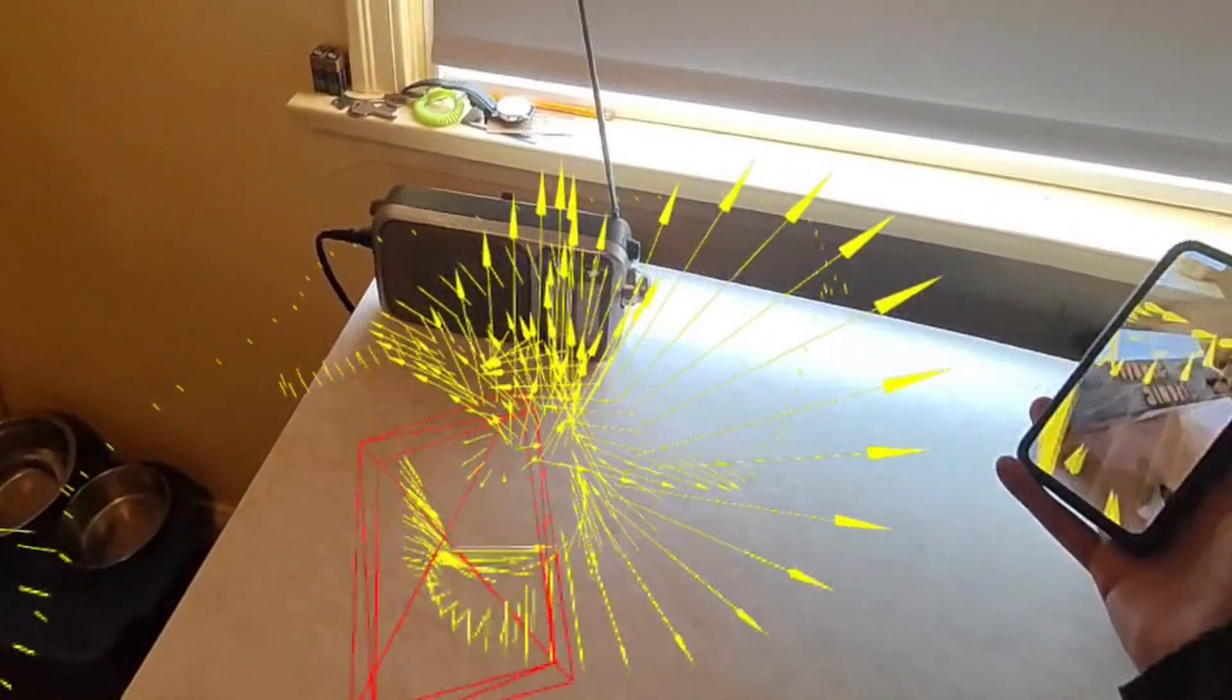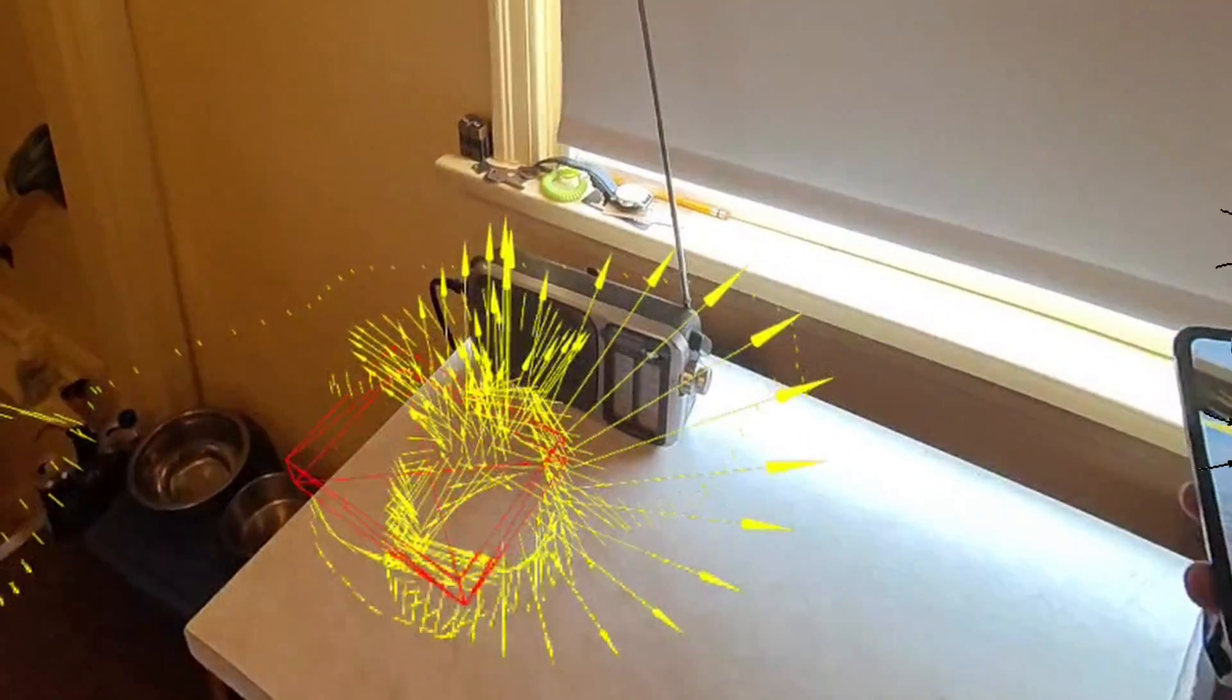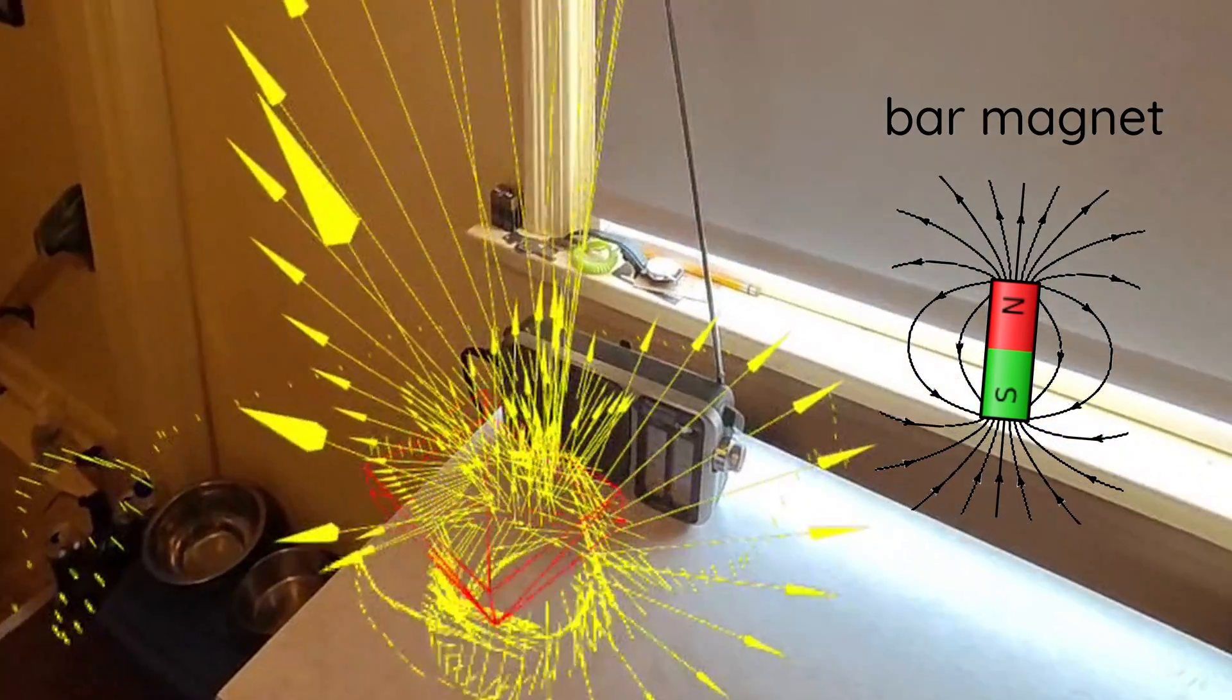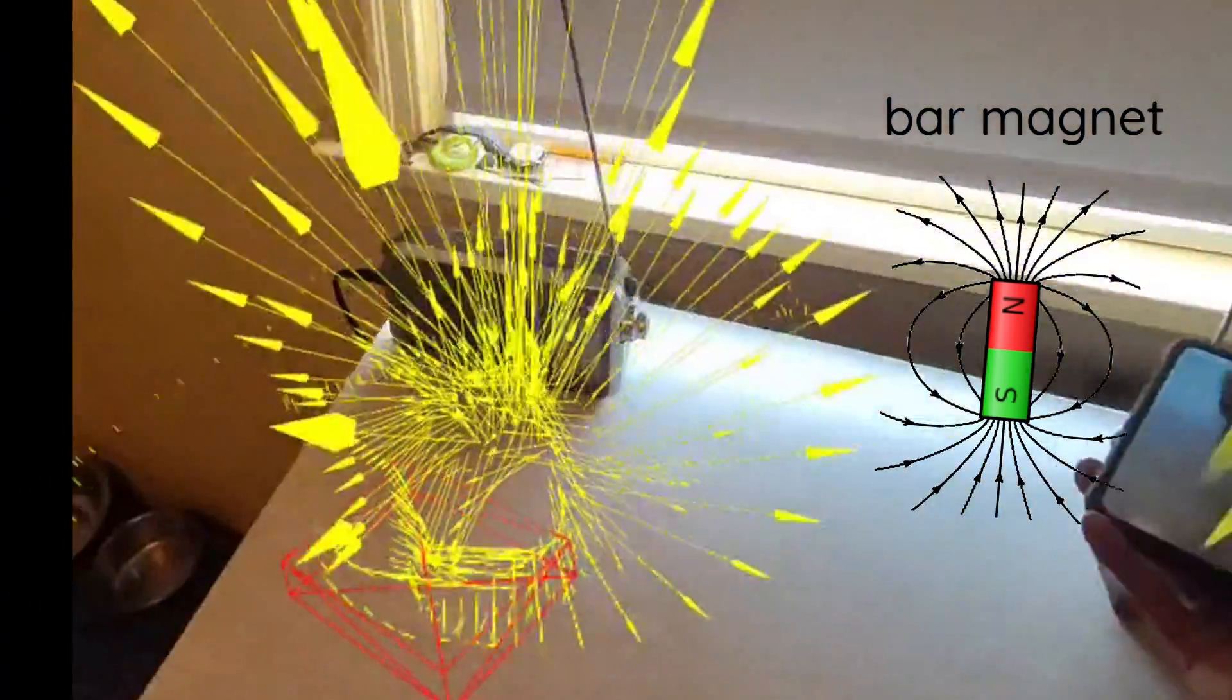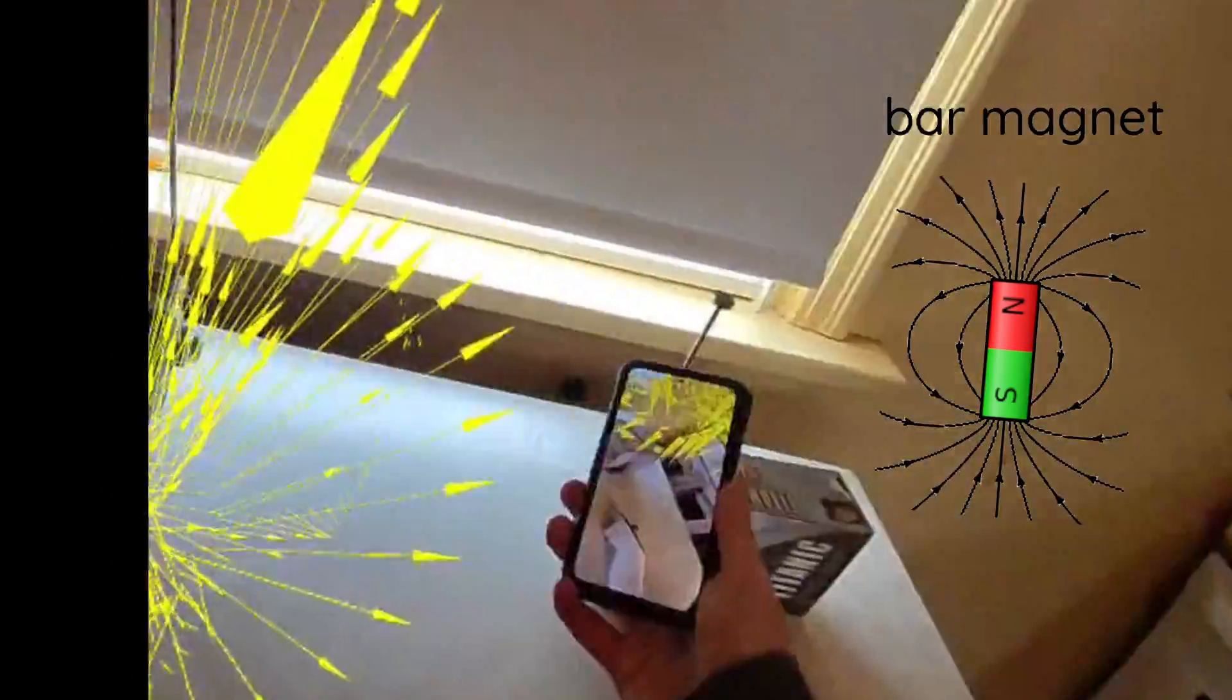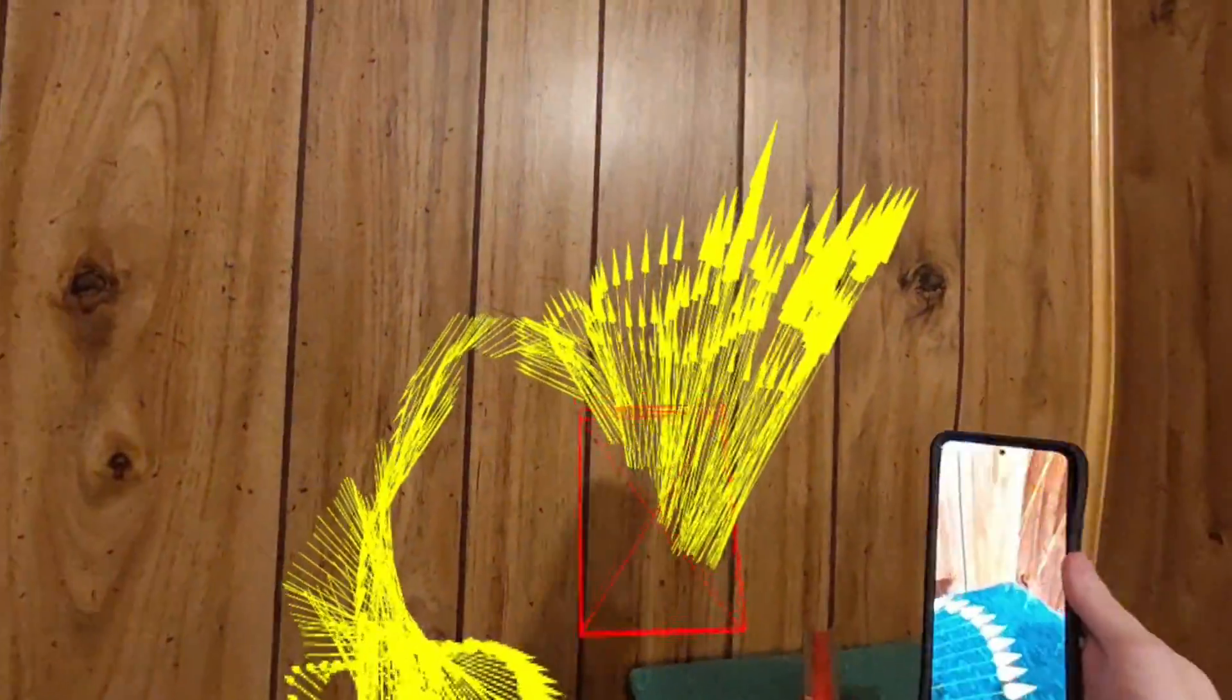We can start exploring some of the different magnetic fields. Bar magnets are interesting because they give a good baseline to make sure everything is working correctly. All of the magnetic field lines travel from the north to the south pole, and we have this spherical cylindrical type shape where all these magnetic fields travel around the magnet. We can see it's working how it should.